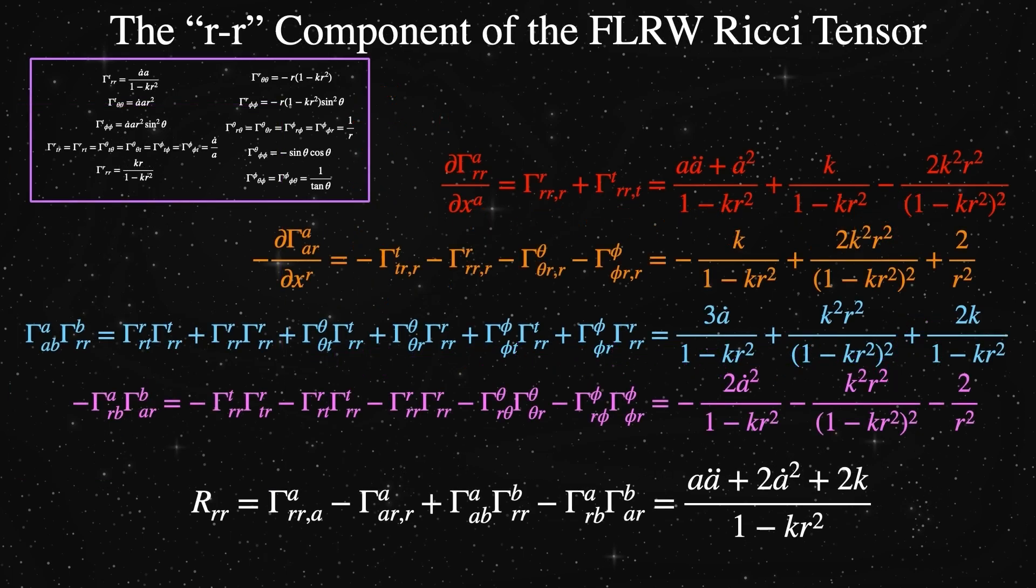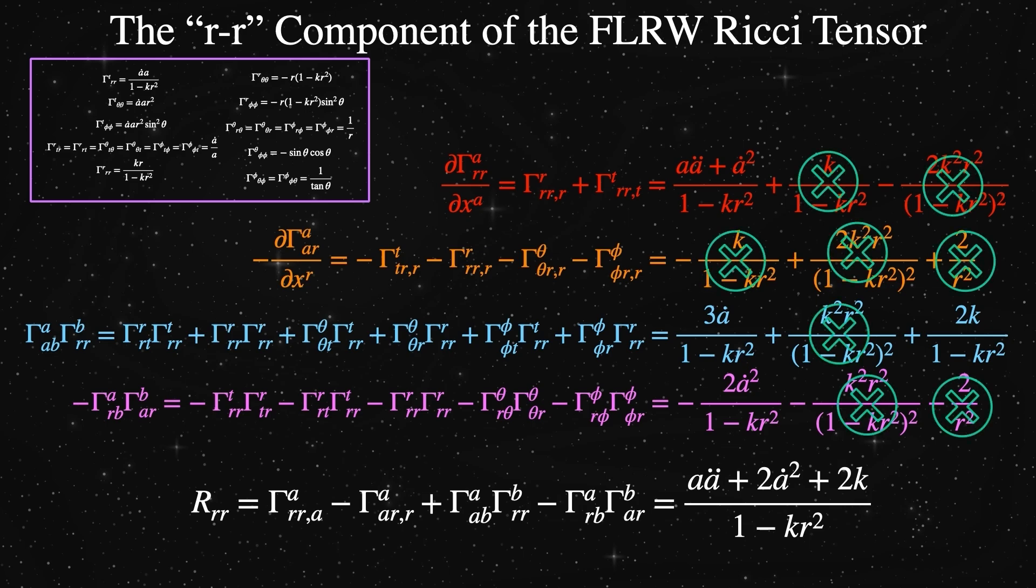The R-R component of the Ricci tensor is a real mess. There are a large number of terms, and only a few of which are zero. Again, the top two are the first two terms in the Ricci tensor's summation, which each themselves are sums over partial derivatives. The bottom two are also sums of products of Christoffel symbols. The R-R component has a lot of curvature constant k terms, a few scale factor terms, but no presence of theta or phi coordinates anywhere. The radial symmetry, meaning the isotropy of the space, is apparent with that. When we add everything up, we get a lot of canceled terms. This makes the final result of the R-R component of the Ricci tensor really a simple-looking thing across the bottom.